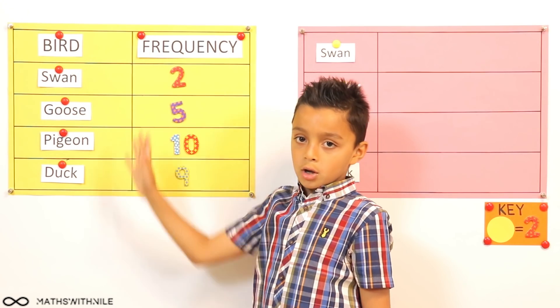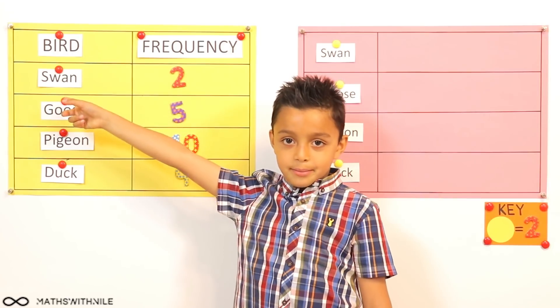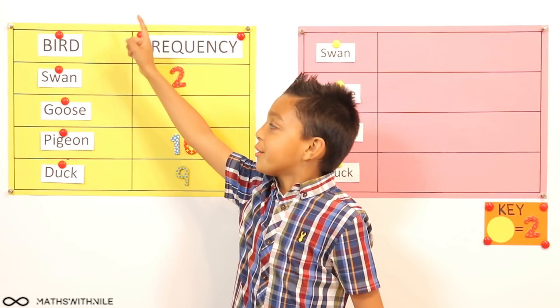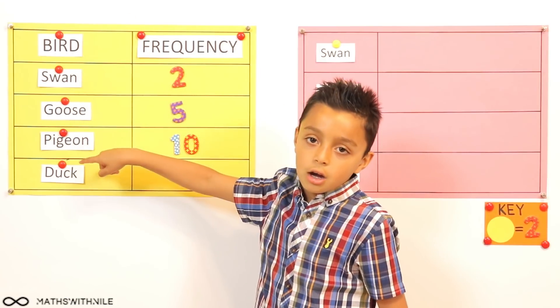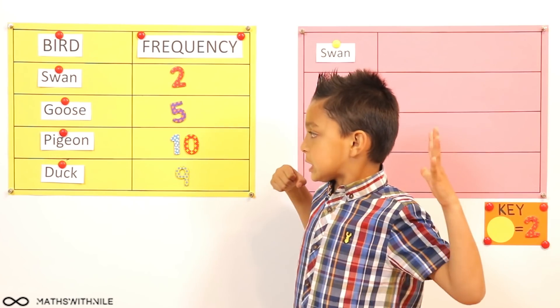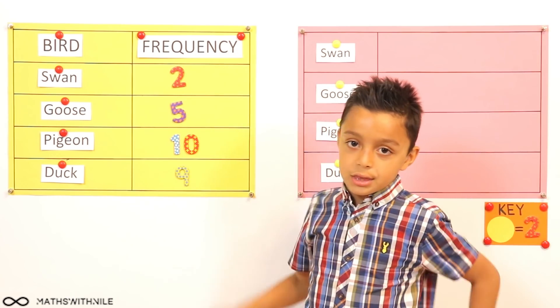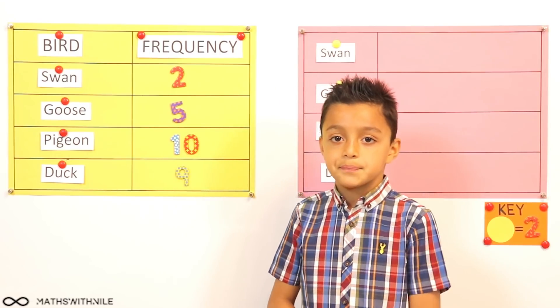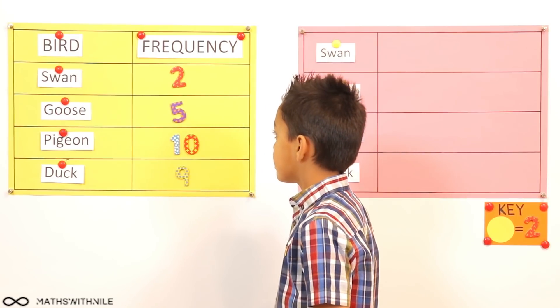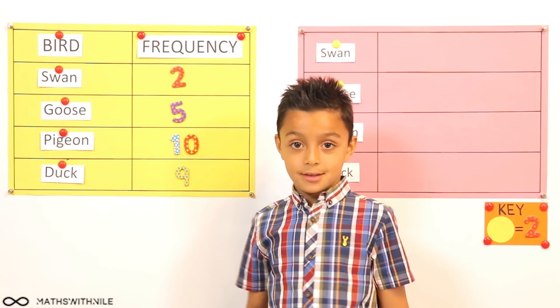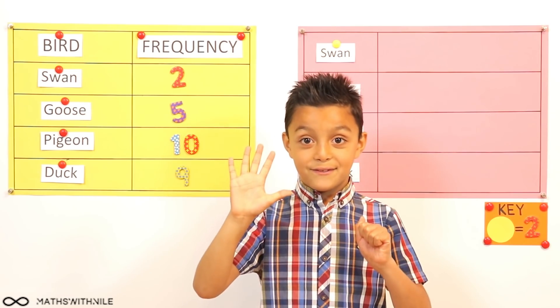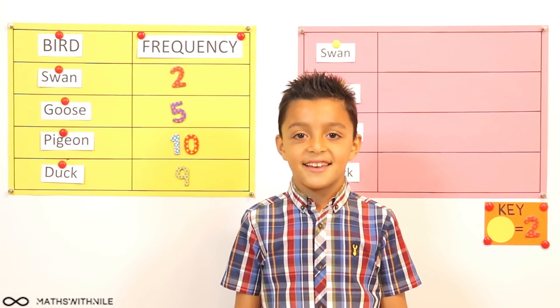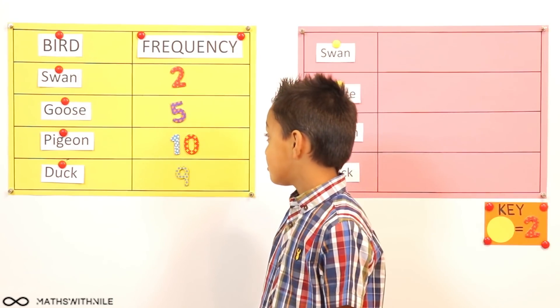Our heading for this column is birds, because these are the birds that I saw at the park. And then our birds are swan, geese, pigeon and ducks. Okay, and what about the second column? It says frequency, which means like how many. How many, okay, so how many swans did you see? Two. And how many geese? Five. Pigeons? Ten. And ducks? Nine. Brilliant.